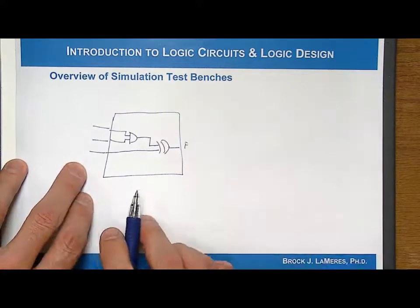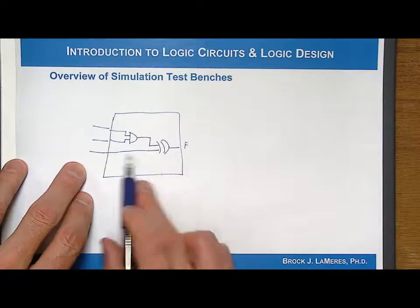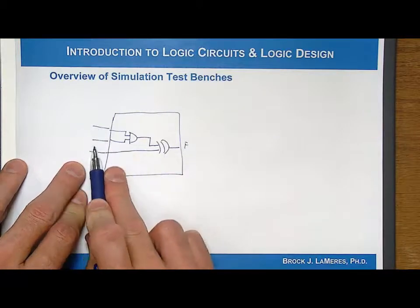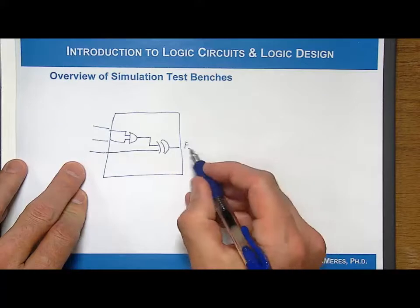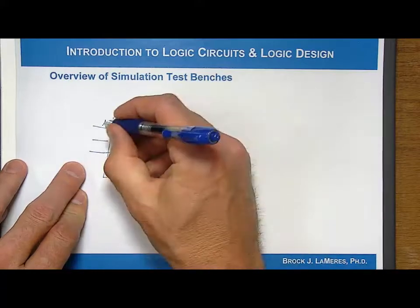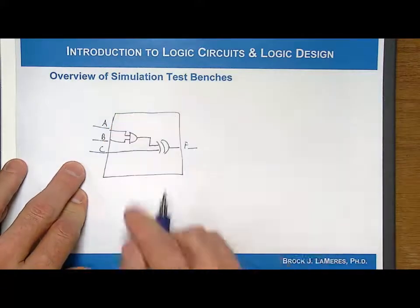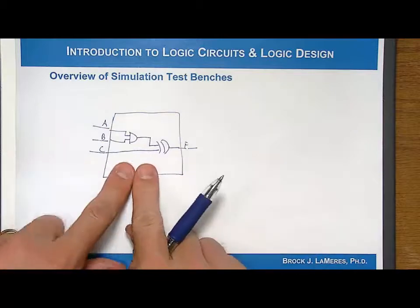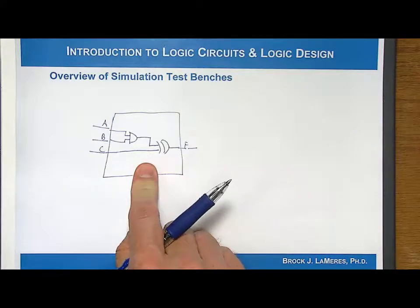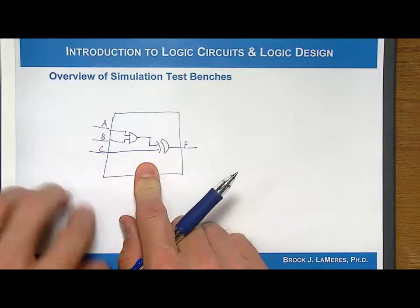What you want to do is you want to make sure that this works, but you have to drive in different input patterns, and then observe the output. So, let's say A, B, C, and F. Notice that this model right here does not have any stimulus generation. It's not producing 1's and 0's.